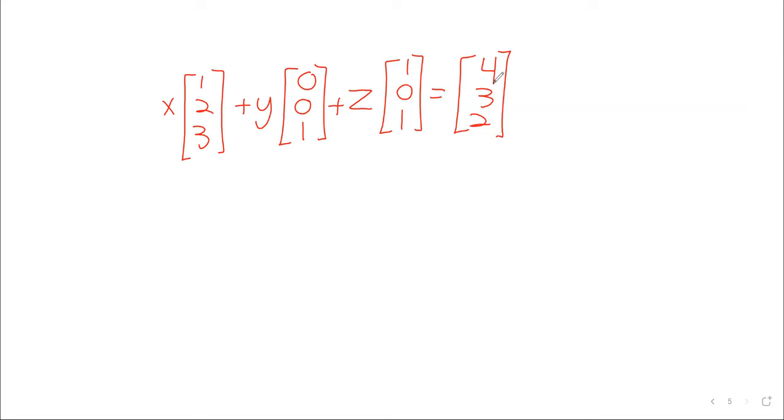Let me just make the observation that because we have addition and scalar multiplication and equality, we can create equations involving vectors. Like x times [2,3] plus y times [0,0,1] plus z times [1,0,1] equals [4,3,2]. Just making something up at random here.